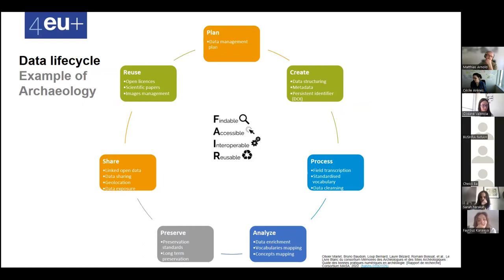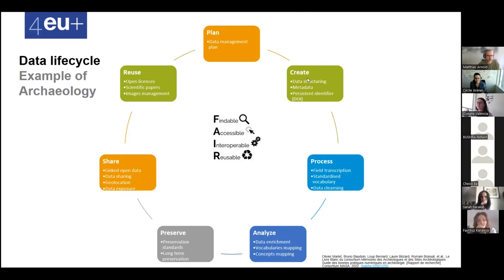Data is findable because of its DOI; it's accessible because it's accurately described; it's interoperable because they have used standardized vocabularies; and finally the data is reusable because they have an open license. We are going now to review the FAIR principles in detail.